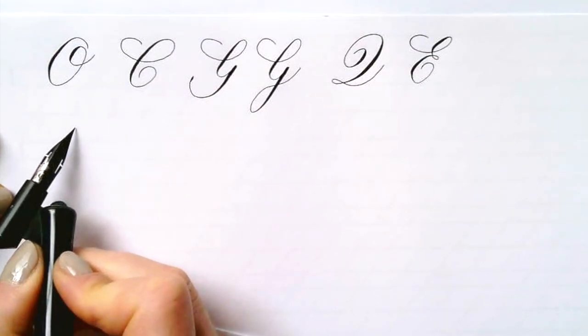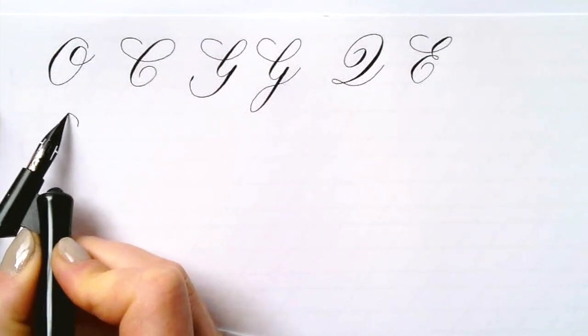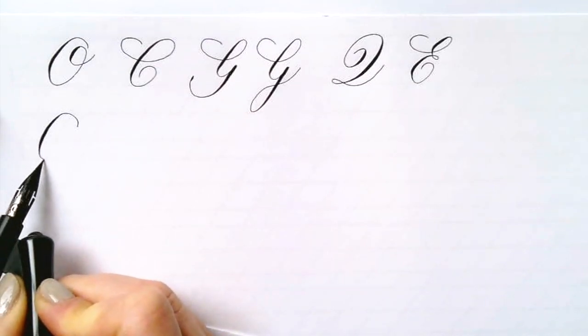This next group is super fun. They are based on the oval forms and let's start with the O. You already know it.